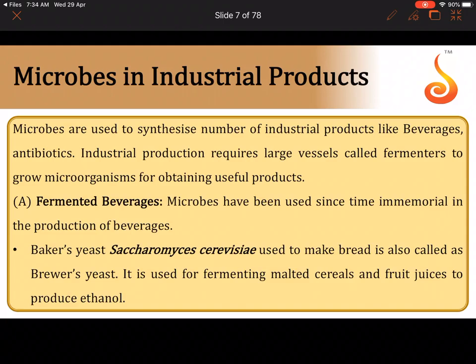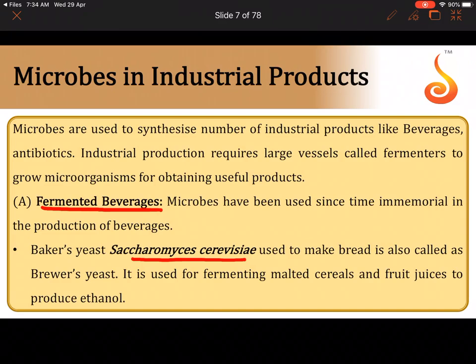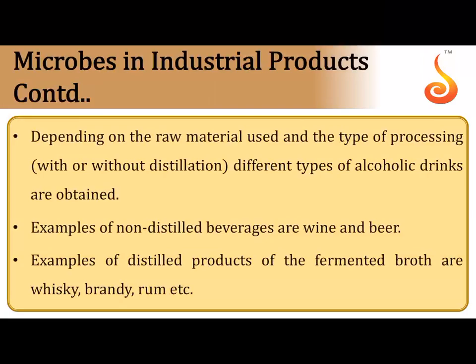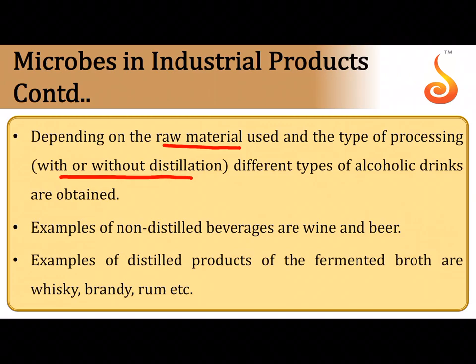Moving on to industrial products — the first is fermented beverages. The same yeast used as baker's yeast, Saccharomyces cerevisiae, can also be used in brewing fermented beverages through alcohol fermentation (anaerobic respiration), making it also the brewer's yeast. For ethanol production, we can use malted cereal or fruit juice as raw material, and whether or not distillation is carried out determines the percentage of alcohol.